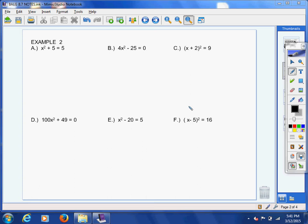Back, we're still in 8.7. Example 2 is really similar to example 1. What we want to do is get our squared variable or our squared quantity on one side and our constant number on the other side. That's our goal.